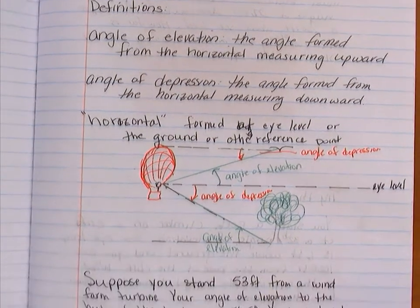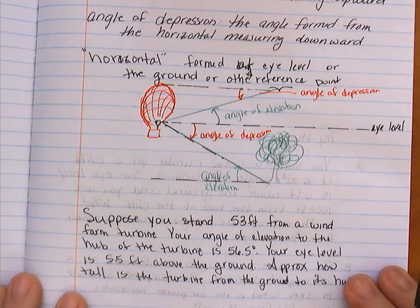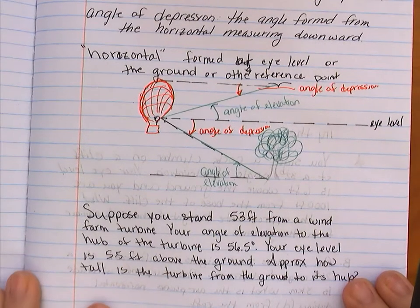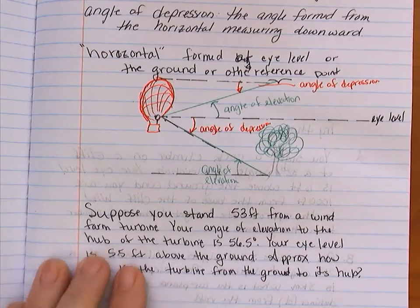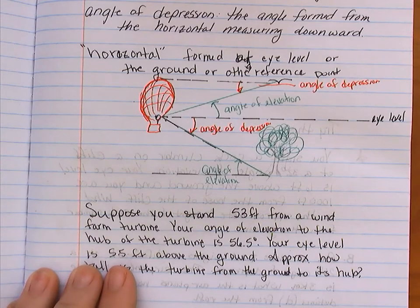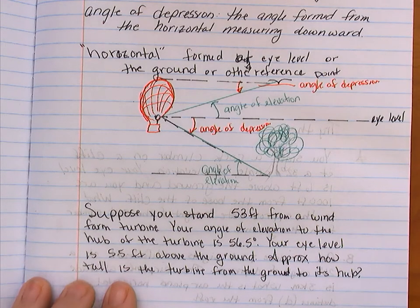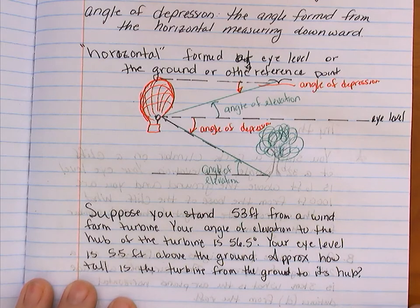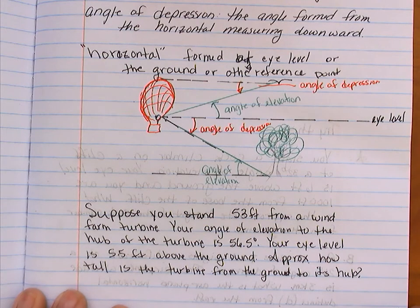Okay. So our first problem. Suppose you stand 50 feet from a wind turbine. Your angle of elevation to the hub of the turbine is 56.5 degrees. Your eye level is 5.5 feet above the ground. Approximately how tall is the turbine from the ground to its hub?